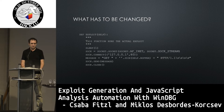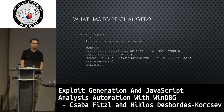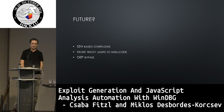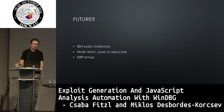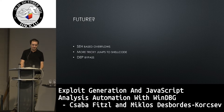I tested this with a bunch of applications and I have other demo videos I'll post on YouTube. It works pretty reliably. A potential challenge is if you need to interact with the application in a specific way to trigger the crash. For the future, I plan to add SEH-based overflow support, more logic for tricky jumps to shellcode, and possibly DEP bypass by generating ROP chains.